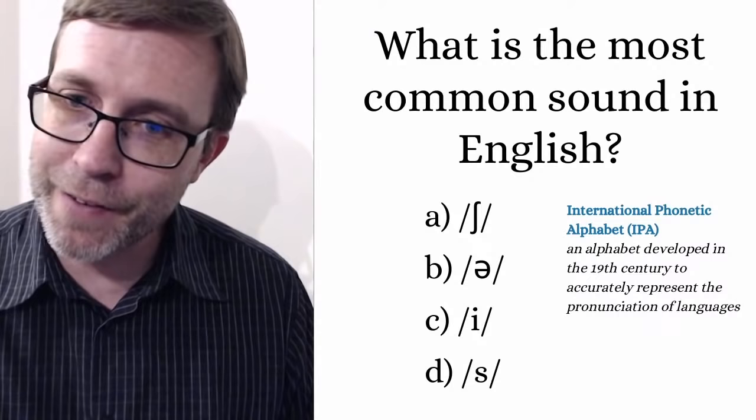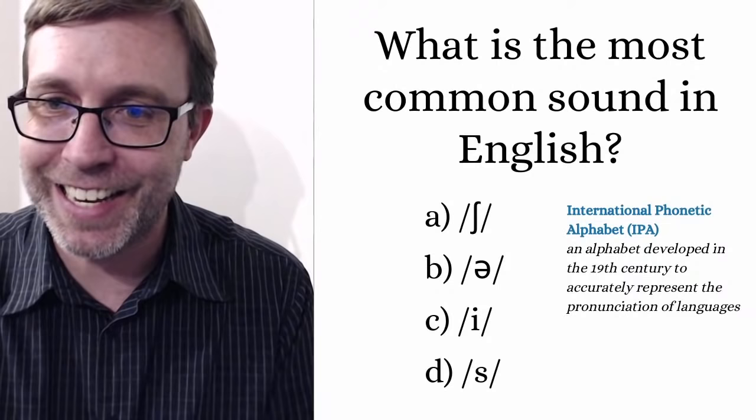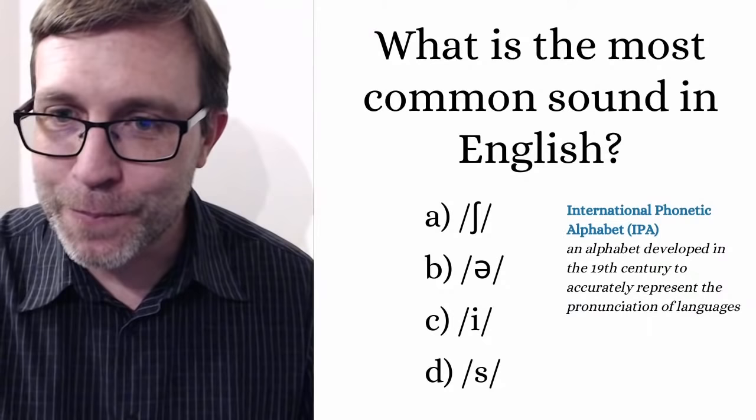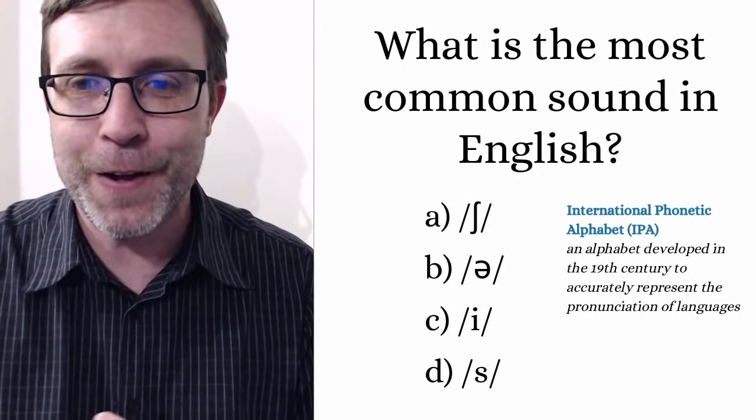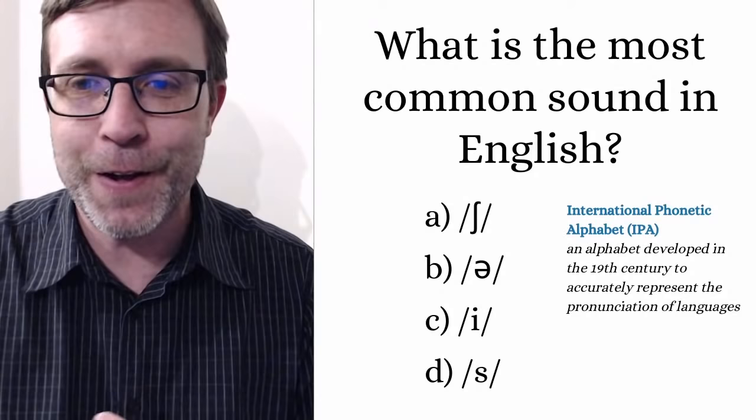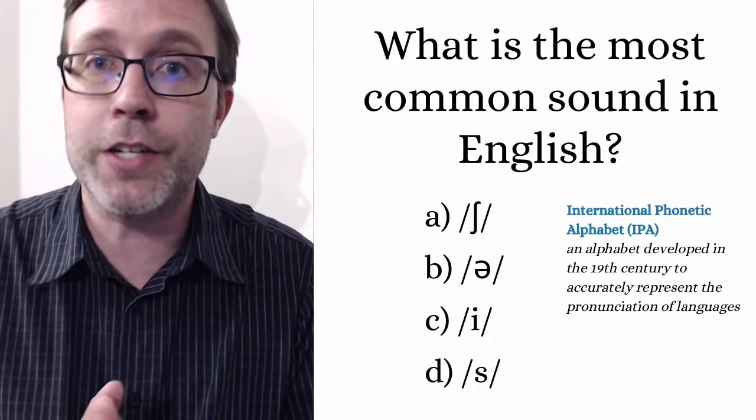Many of you have answered — excellent. The correct answer is B. I'll go through and say these sounds for you, though I think if I said the sound it would make it a little too easy. So A is the symbol for a 'ch' sound. B is the schwa sound — that is the answer, the most common sound — and it sounds more like an 'uh.' C, even though it's an I, it's more of a long E sound, like in 'sheep.' And D is just the consonant S sound, like 'snake.'